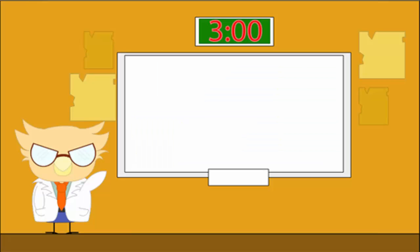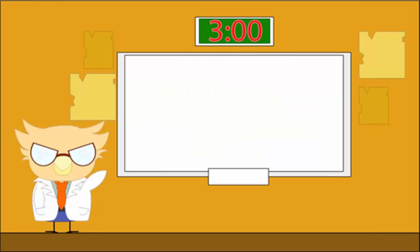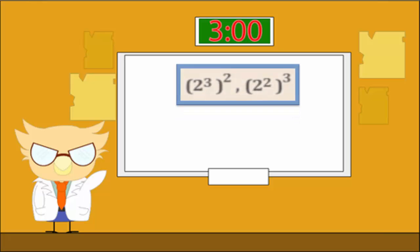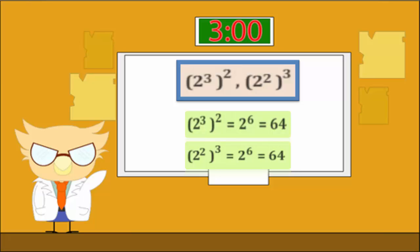Number 3: 3 times 4 all to the power 3. Solution: 3 times 4 all to the power 3 equals 3 to the power 3 times 4 to the power 3, equals 27 times 64, equals 1728. Number 4: 2 cubed all squared, and 2 to the power 2 all to the power 3. Solution: 2 to the power 3 all to the power 2 equals 2 to the power 6, equals 64. And 2 to the power 2 all to the power 3 equals 2 to the power 6, also equals 64.